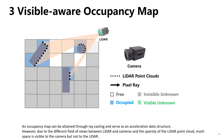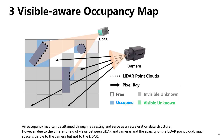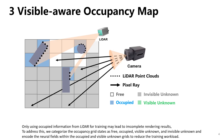An occupancy map can be attained through ray casting and serve as an acceleration data structure. However, due to the different fields of view between LiDAR and cameras and the sparsity of the LiDAR point cloud, much space is visible to the camera but not to the LiDAR. Only using occupied information from LiDAR for training may lead to incomplete rendering results. To address this, we categorize the occupancy grid states as free, occupied, visible unknown, and invisible unknown, and encode the neural fields within the occupied and visible unknown grids to reduce the training workload.